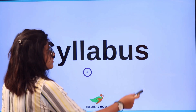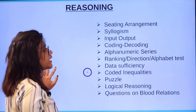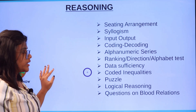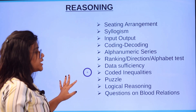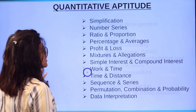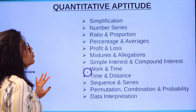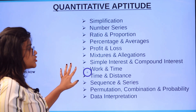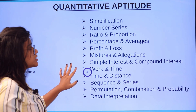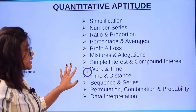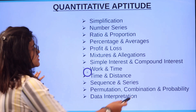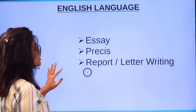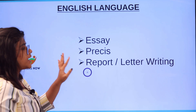The syllabus for Reasoning includes: seating arrangement, input-output, coding-decoding, ranking, direction, data sufficiency, coding inequalities, and puzzles. For Quantitative Aptitude, the topics are: simplification, number series, mixtures and allegations, profit and loss, simple interest, work and time, time and distance, and the remaining topics mentioned on screen.